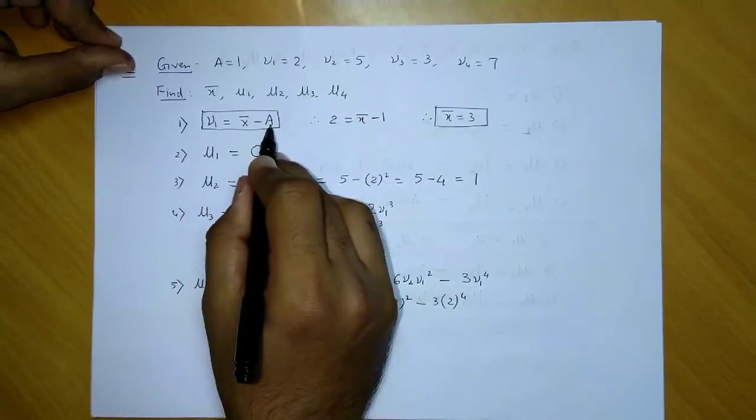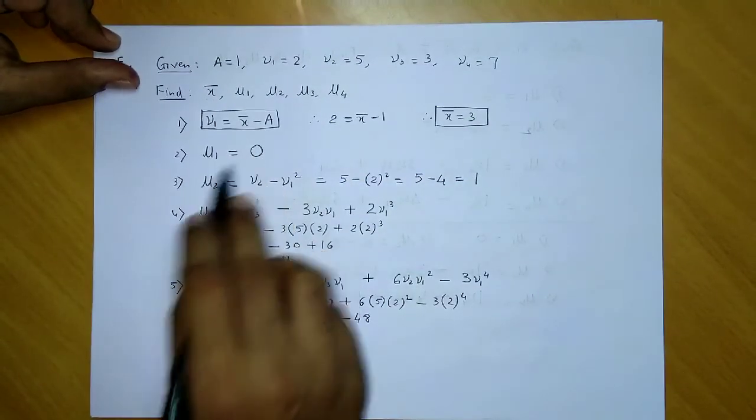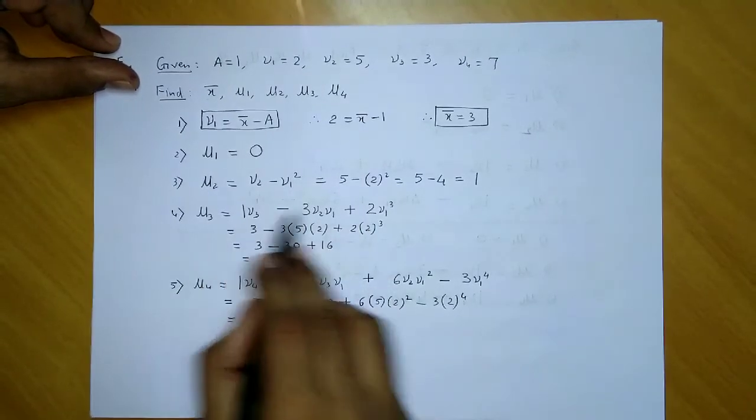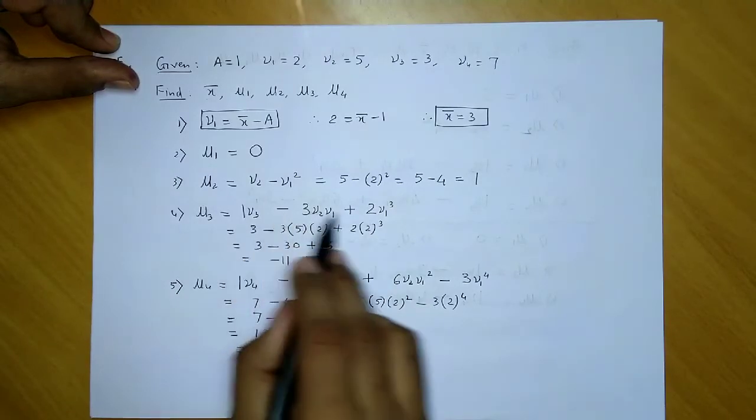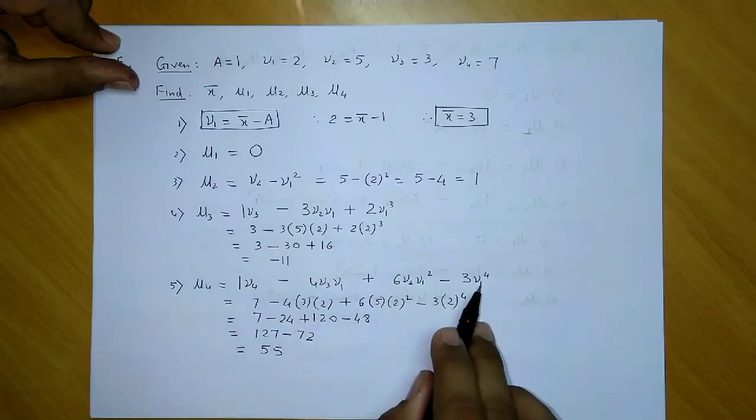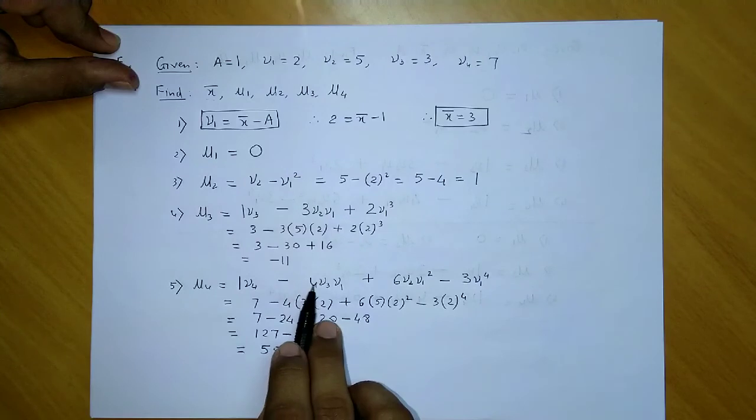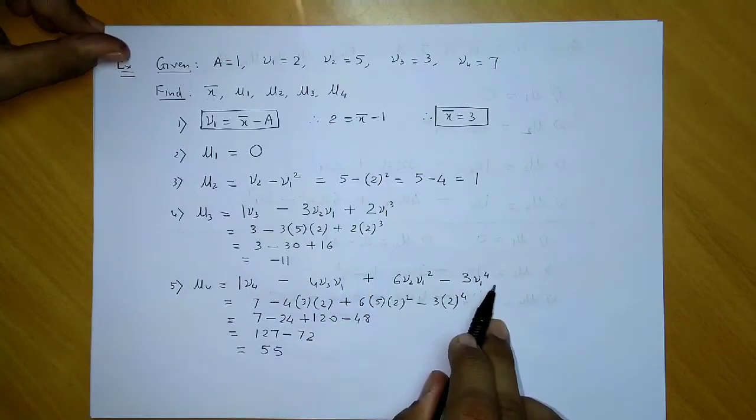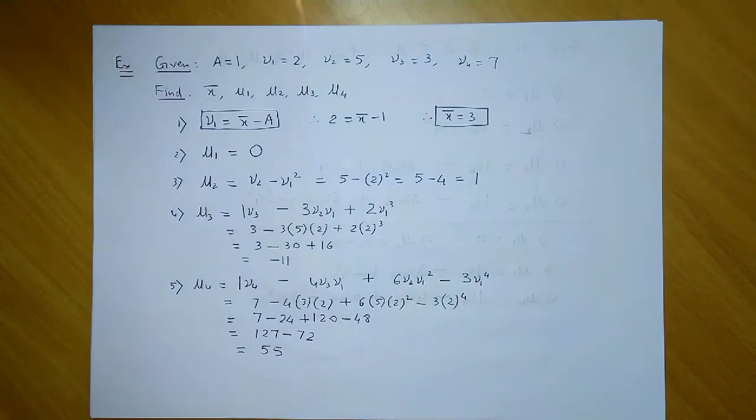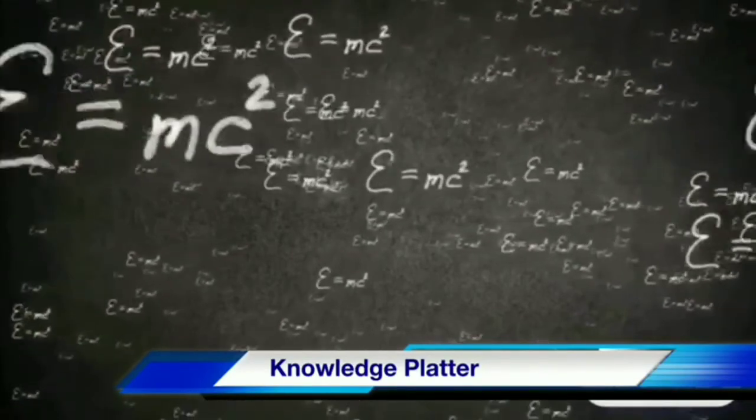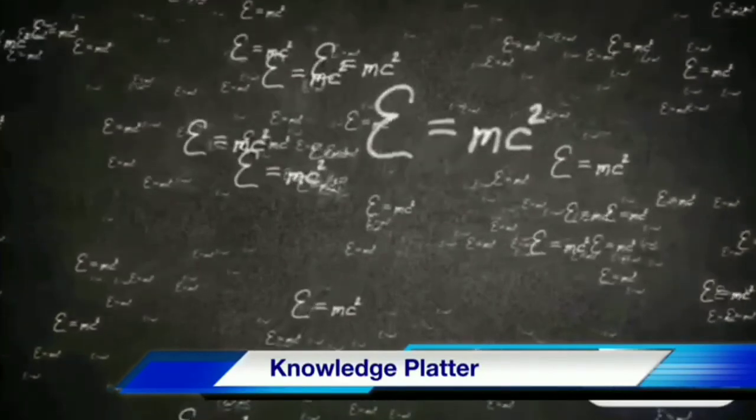Please remember this relation: v1 = x̄ - A. Substitute here to get the mean. Then first central moment is 0, second is v2 - v1². μ3 uses coefficients 1, 3, 2 with v3, v1³, and v2v1. μ4 uses 1, 4, 6, 3 with corresponding terms. Simply substitute the values. This was an example explaining how to convert arbitrary moments into central moments.